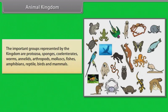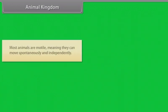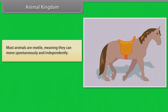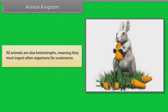mollusks, fishes, amphibians, reptiles, birds and mammals. The body plan of animals eventually becomes fixed as they develop, although some undergo a process of metamorphosis later in their life. Most animals are motile, meaning they can move spontaneously and independently. All animals are also heterotrophs, meaning they must ingest other organisms for sustenance.